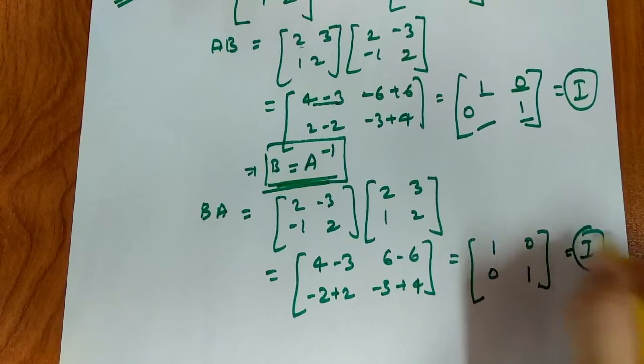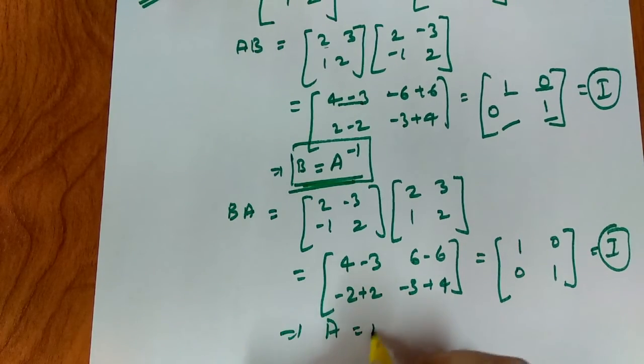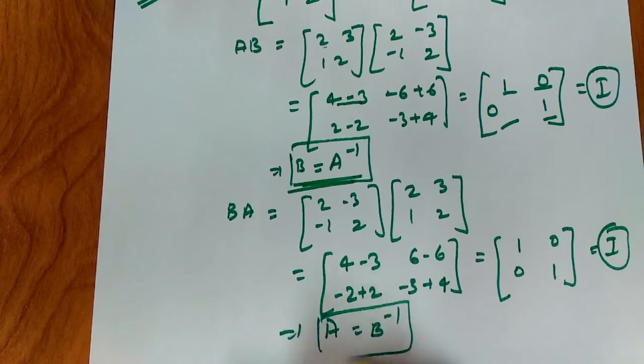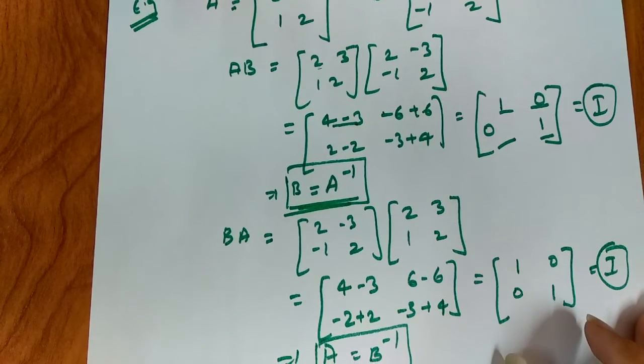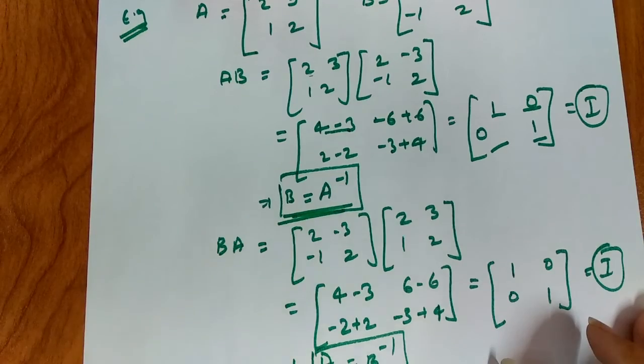Look, our BA is equal to the identity matrix. What does this mean? A is the inverse of B. What did we prove in this example? That AB and BA both are equal to the identity matrix. That means A is the inverse of B and B is the inverse of A.